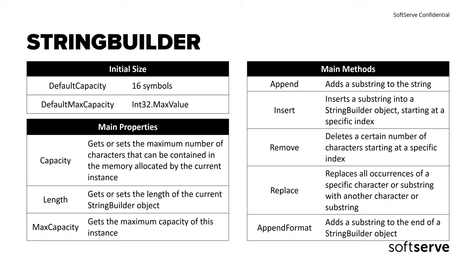Additionally, memory of the StringBuilder object is allocated dynamically until it reaches the value defined by the StringBuilder MaxCapacity property. When the maximum capacity is reached, no further memory can be allocated, and trying to add characters or expand it beyond its maximum capacity throws an exception. The default capacity of a StringBuilder object is 16 characters, and the default maximum capacity is the max value of Int32.